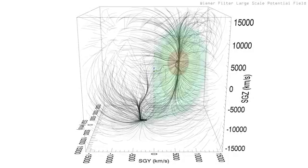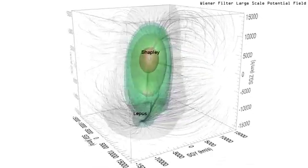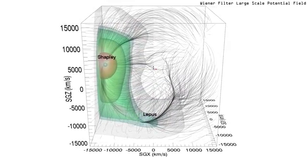Here we superimpose the potential field responsible for the peculiar velocity flow. The Shapley galaxy concentration is the dominant local feature. The secondary feature in the direction of Lepus appears to be connected.